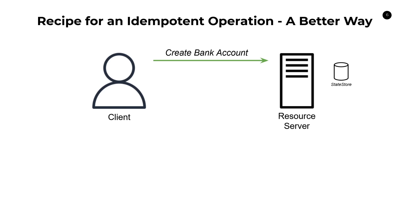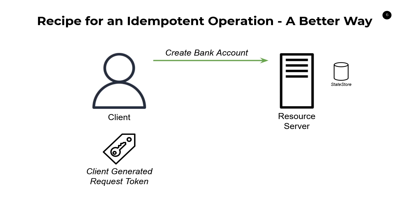Instead of the resource server inspecting the input arguments and trying to deduce whether this is a repeat request, we put the onus on the client. We say, as part of our API contract, that in order to call 'create bank account', you need to provide a unique UUID as an input argument. And any time you have retries that are part of that same initial batch of calls, you use that same token. So now we're passing in input arguments plus the token.